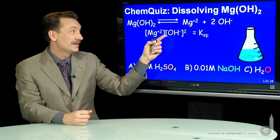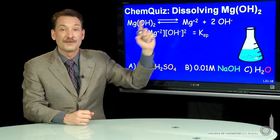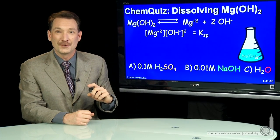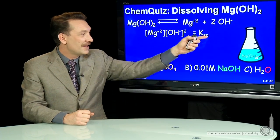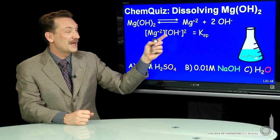And you can write the equilibrium expression, magnesium ions and hydroxide ions squared in this case, stoichiometric coefficient of 2. The pure solid doesn't appear in equilibrium expressions. So we have a Kₛₚ solubility product for magnesium hydroxide.